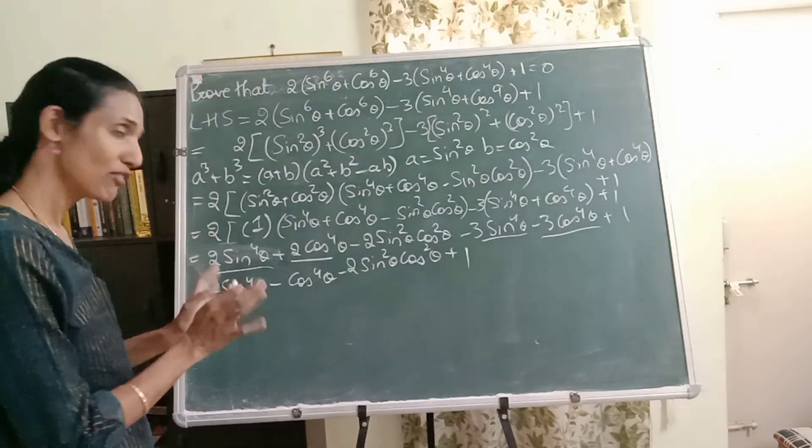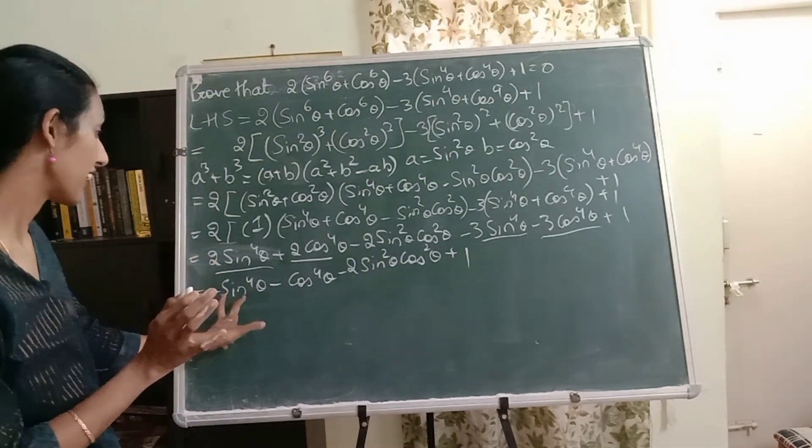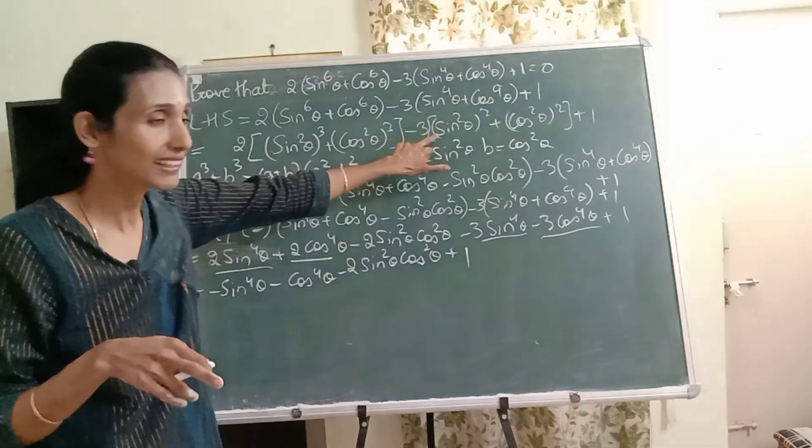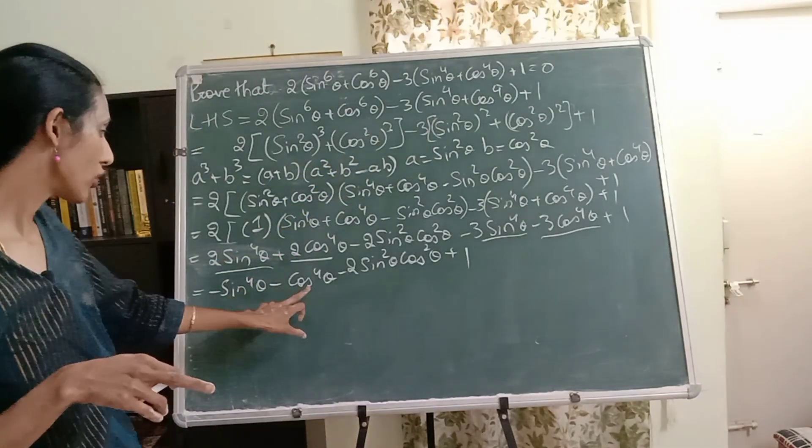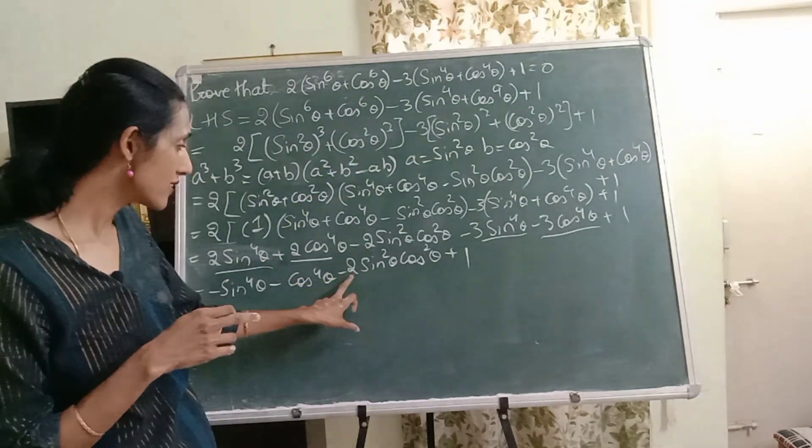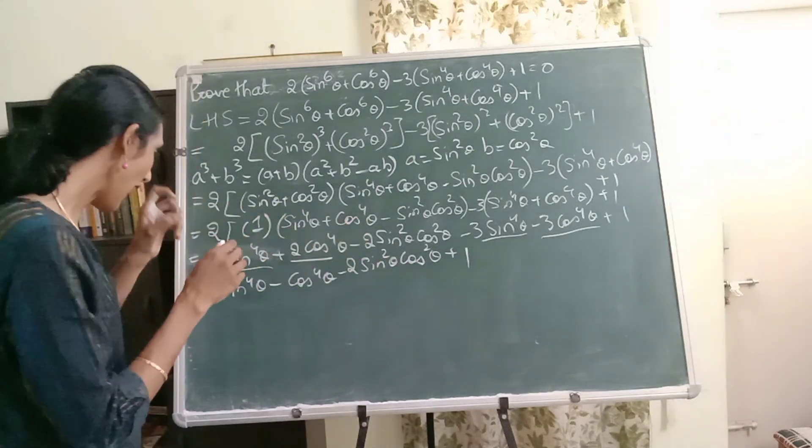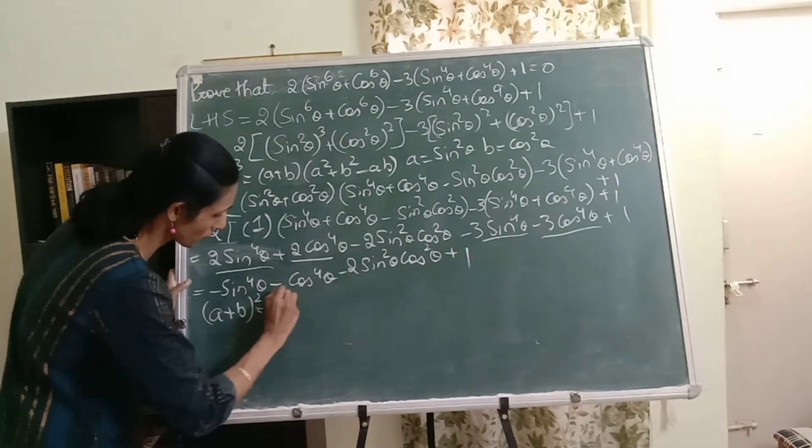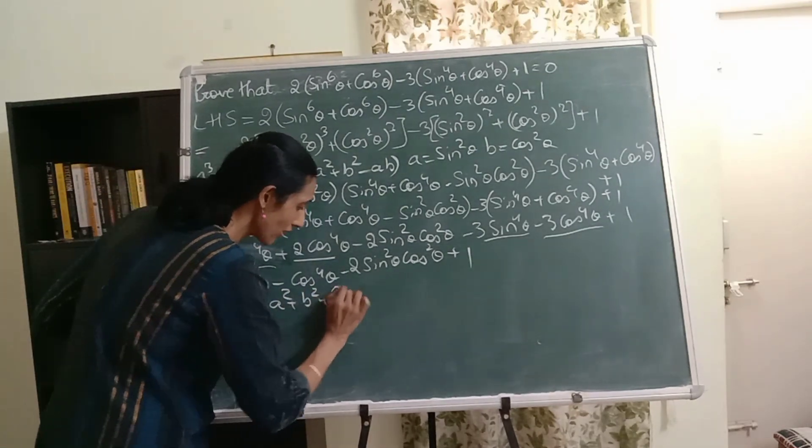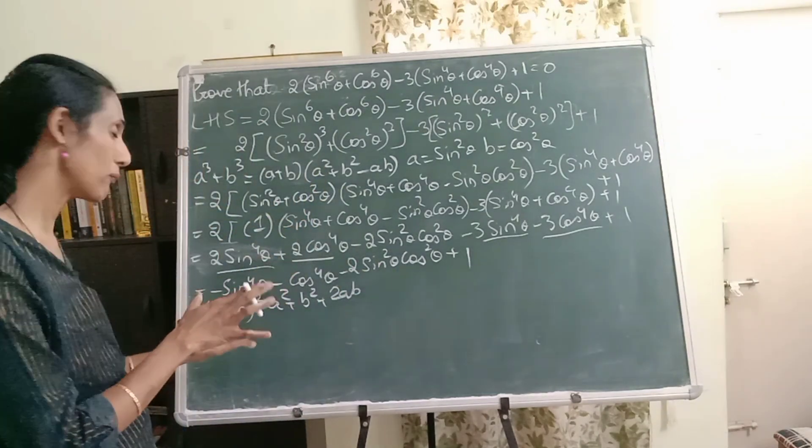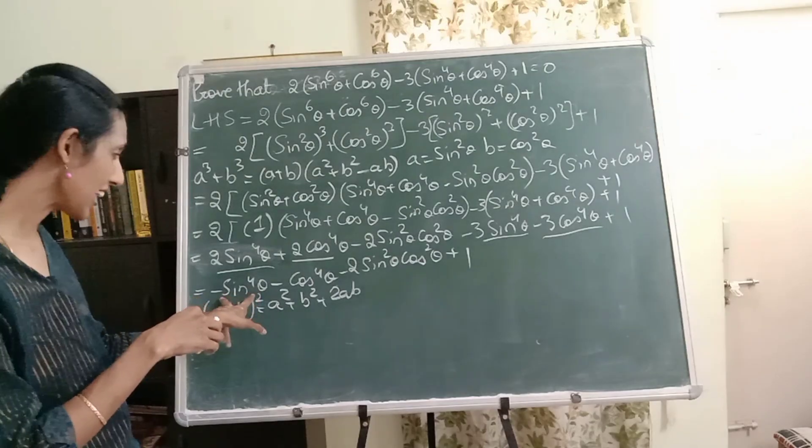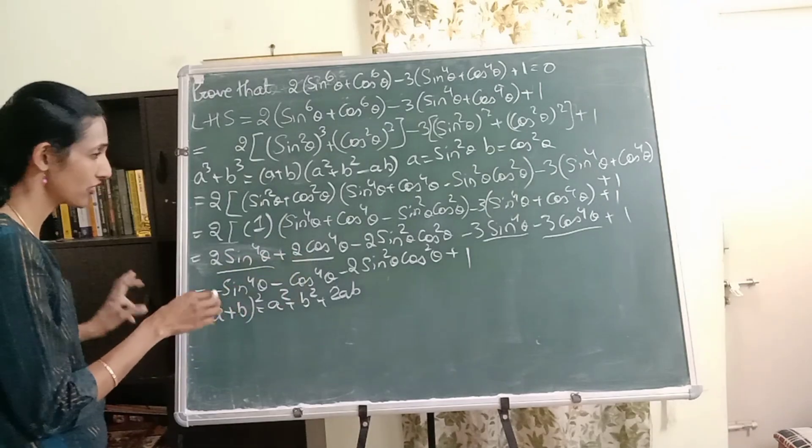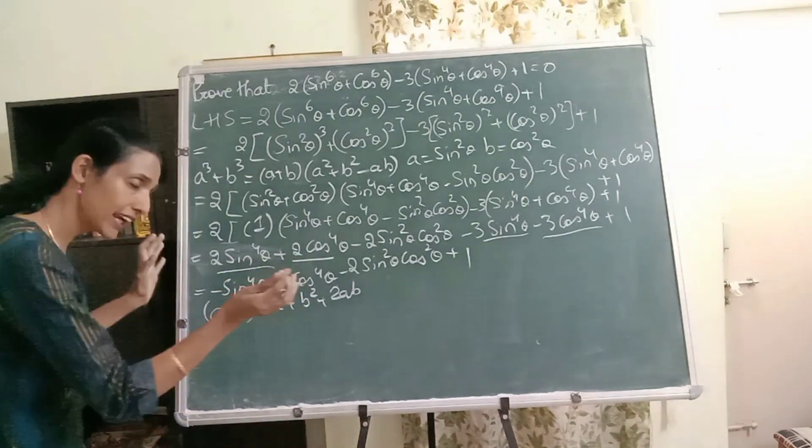Now what do we do? Again think for a few seconds. I think we can write sine raised to 4 as sine square theta the whole square. So this also I can write as cos square theta the whole square. And this you have 2 sine square theta cos square theta. So I think it looks like the expansion of a plus b the whole square. So whenever you have this 2ab term, always see if you can apply these identities. So this surely looks like a square plus b square plus 2ab. Only problem is there is a minus in all the three terms. So let me just take out the minus common.